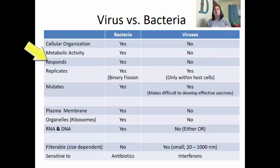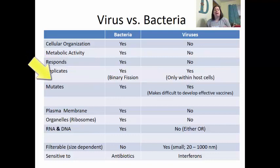Another difference is replication. Bacteria replicates through binary fission, whereas viruses replicate only within a host cell — whether that host is a bacteria, plant, animal, protist, or fungus — it has to gain access into a cell. Bacteria can mutate, which makes it hard to treat with antibiotics. Viruses also have the ability to mutate, which makes it difficult to develop effective vaccines against them.